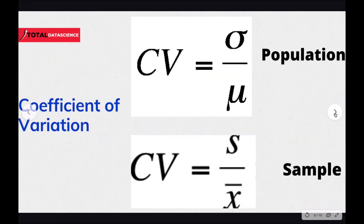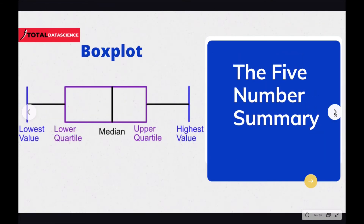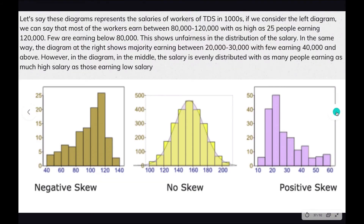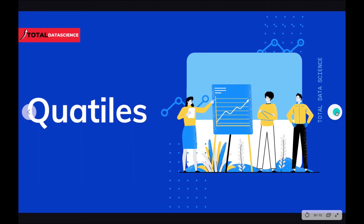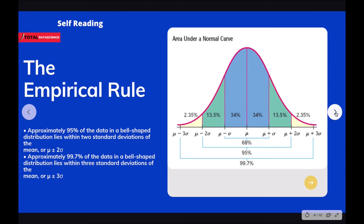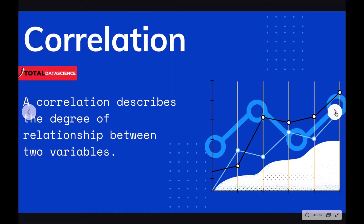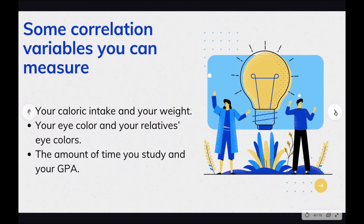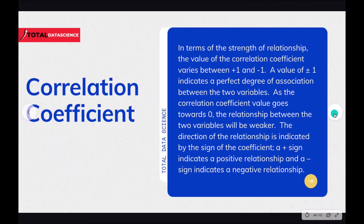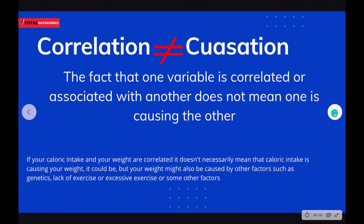We'll also cover box plots, which is something we'll need over and over again in machine learning and deep learning. We'll talk about skewness, quartiles with practical examples, the empirical rule, and correlation — which is one of the key things we'll dive deep into. There are some additional concepts you'll be introduced to as well.